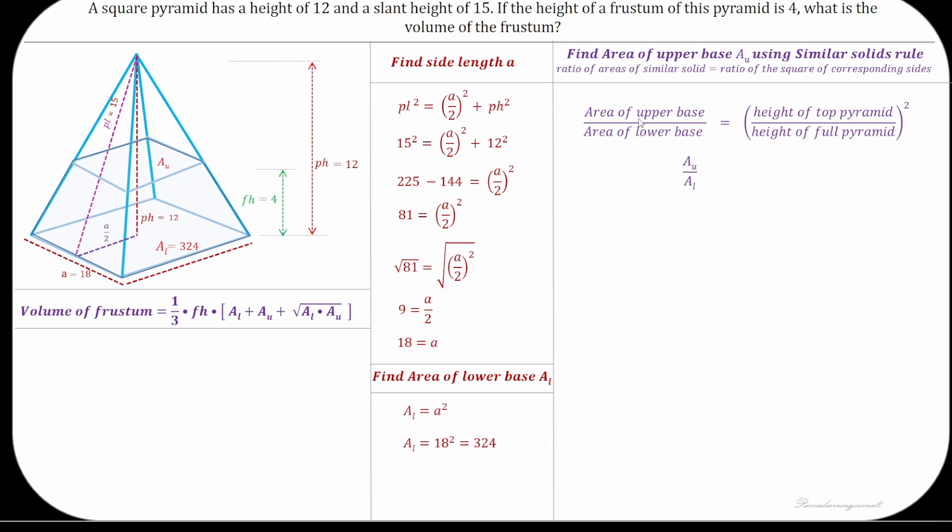Area of upper base is AU and area of lower base is AL and height of the full pyramid is pH and we need to find the height of the top pyramid. For that, subtract the height of the frustum from height of the full pyramid, that is pH minus FH.